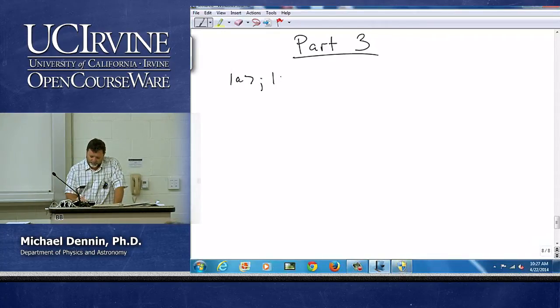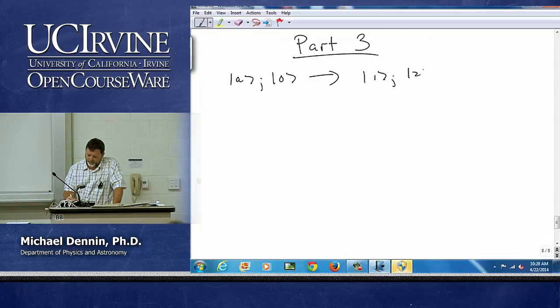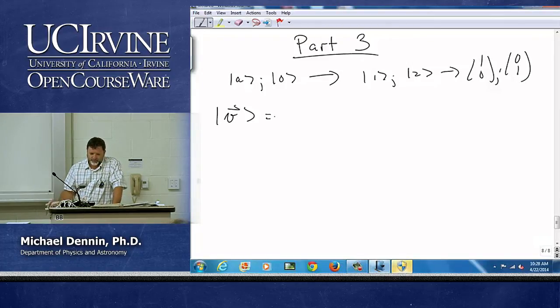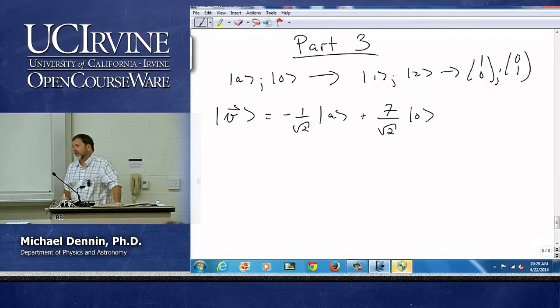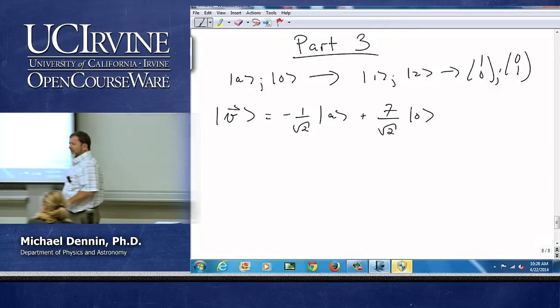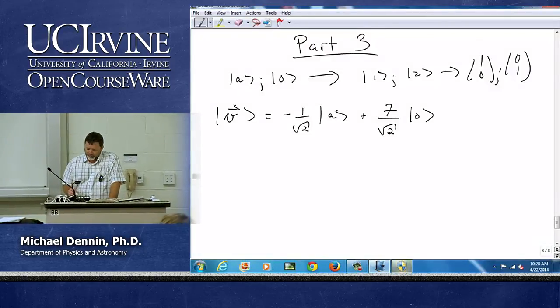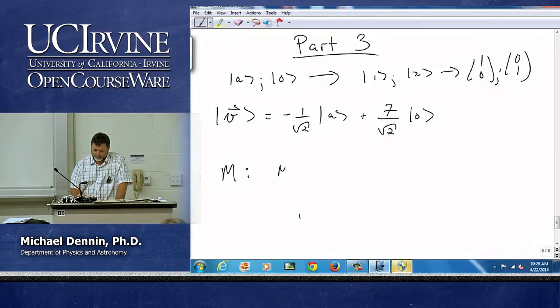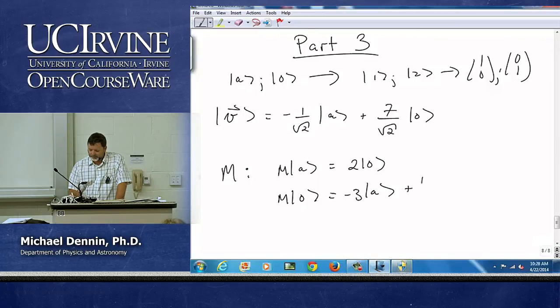So again, we're still in our apple and orange two-dimensional vector space, which we can think of as basis vector 1 and 2 and our column vector 1, 0, 0, 1. And let's just pick some arbitrary vector. I'm going to pick minus 1 over root 2 apples plus 7 over root 2 oranges. Of course, the challenge here is to find 1 over root 2 of an apple. That's a little precise, I realize. But you can approximate it. I don't know whether you count the core or not. And now let's consider some operation M.